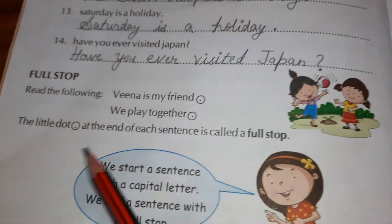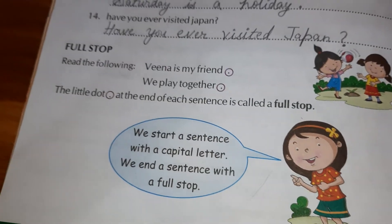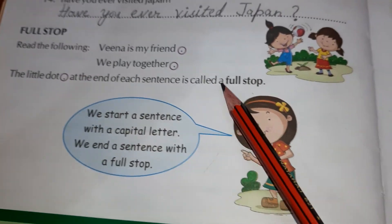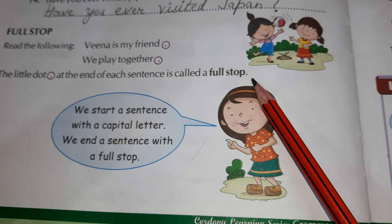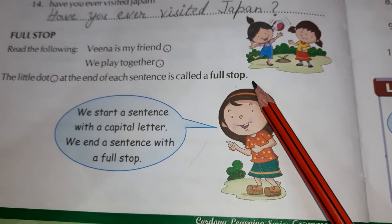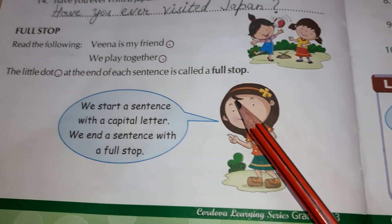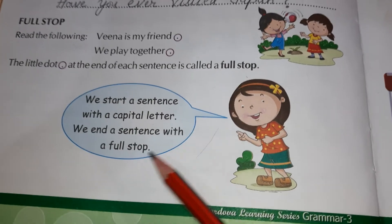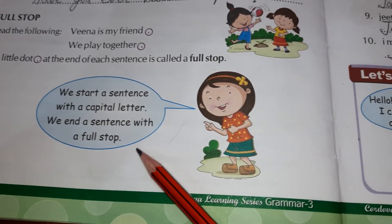Now, full stop. The little dot at the end of each sentence is called a full stop. We start a sentence with a capital letter and we end a sentence with a full stop.